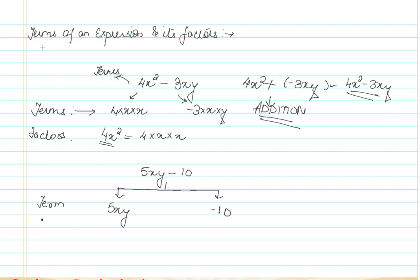Now, I will put a dotted line here for factors to make it a little clearer. To form this term with the help of constants and variables, I need x and y, which are two variables, and 5, a constant, to form the term 5xy. So here, 5, x, and y become the factors of this term.